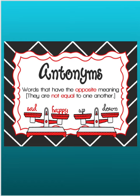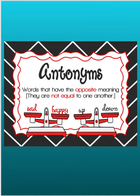Hi, fifth graders. So as you know, last week we worked a lot on synonyms the past couple weeks. So this week we're going to focus and review antonyms. These are words that have the opposite meaning, so they are not equal to each other. So sad and happy are antonyms. Up and down are antonyms. So we're going to work on identifying antonyms in sentences — they have the opposite meaning.